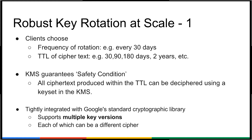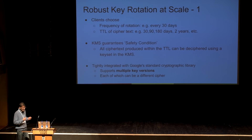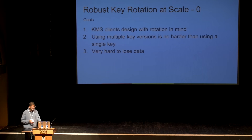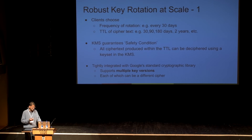This is tightly integrated with Google's standard crypto library, which supports multiple key versions, each of which could be a different cipher — providing the ability to rotate away if a weakness in a cipher is detected. This meets all three goals: it forces clients to design with rotation in mind, the multiple key versions are handled by the library, and we make it very hard for clients to lose their data with a bunch of safeguards.